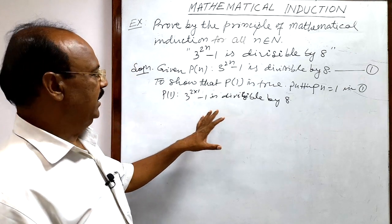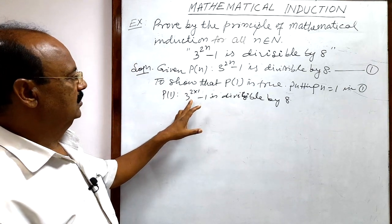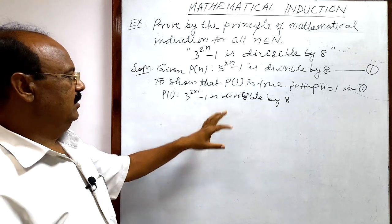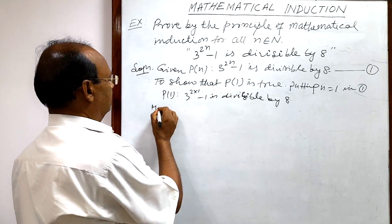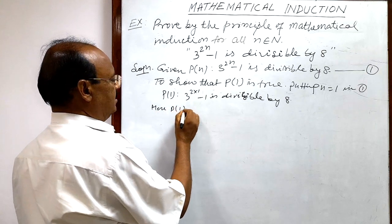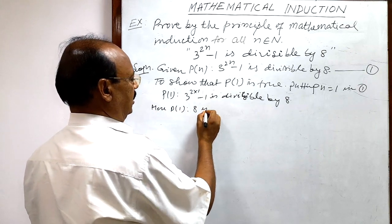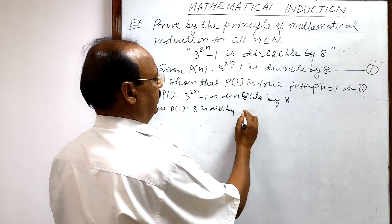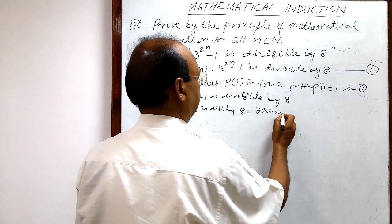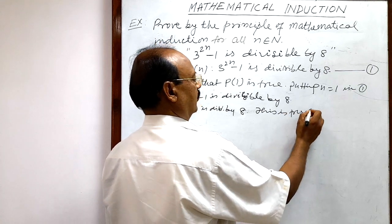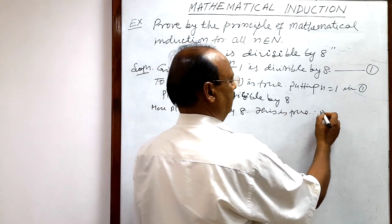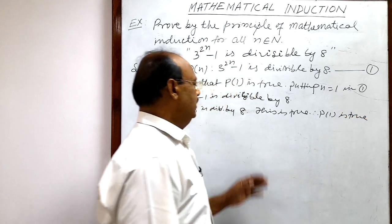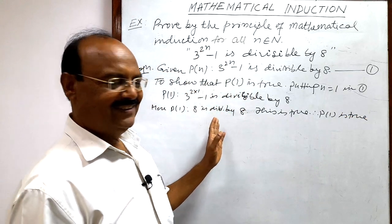And this is true, because 3 squared minus 1 equals 8, and 8 is divisible by 8. So here P(1) equals 8, which is divisible by 8. This is true. Therefore, P(1) is true.